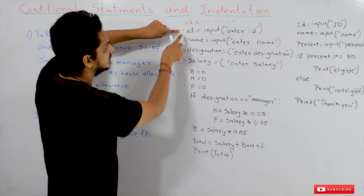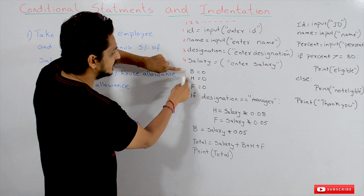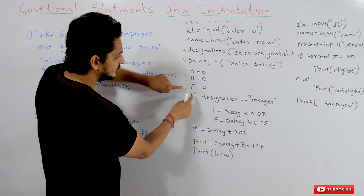So it will execute like this: first line, second line, and so on through the eighth line. If the condition is satisfied, execute that block and continue executing the remaining lines. That is how Python executes. Let us understand indentation and conditional statements better by taking a next example.